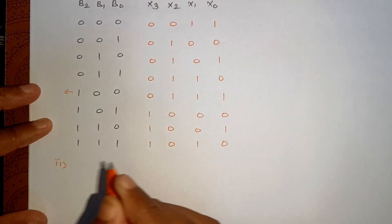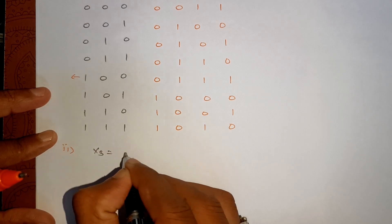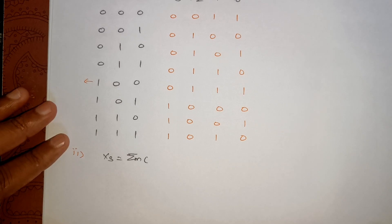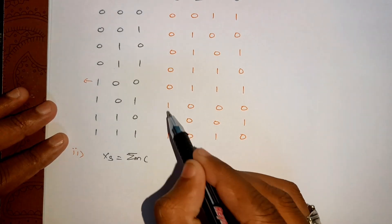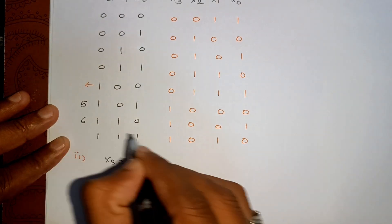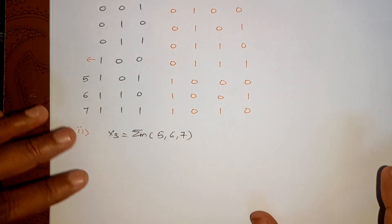Now in the second step, we'll check the output terms which are 1. X3 is equal to summation. X3 is 1 for these three combinations: 1, 0, 1, that is 5, this one is 6, and this one is 7. So we will write for 5, 6, 7, X3 is high.